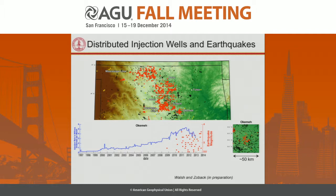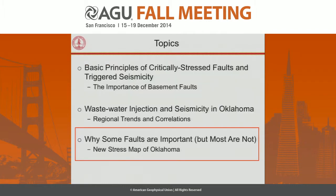You can't just say don't inject above a certain rate. If that wastewater is distributed among other wells so that the average rate is low, right now it looks like it wouldn't change things much at all. It's the cumulative injection in these areas from many wells, and we hope to be able to present that in detail in the near future.